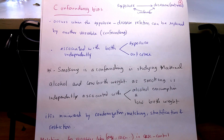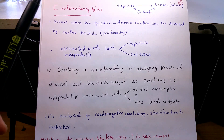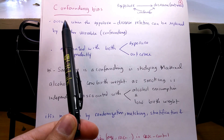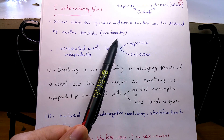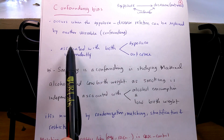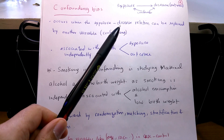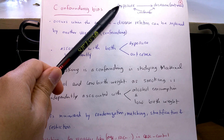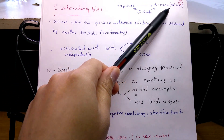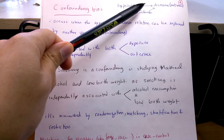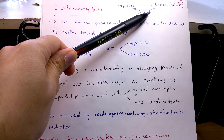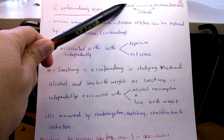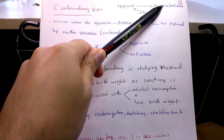So what's confounding bias? It occurs when the exposure-disease or the exposure-outcome relationship can be explained by another variable, which is the confounder. This variable must be associated independently with both the exposure and the outcome. The confounder is another variable that affects the exposure and affects the disease by itself.